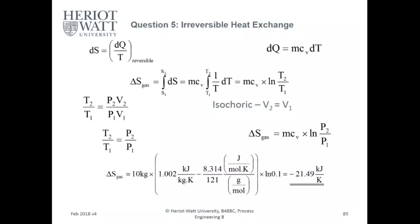minus 21.49 kilojoules per kelvin. Something I missed yesterday: Cp equals Cv plus R, so you have to calculate the unit per gram mole. That's why it's minus 8.314 over 121.